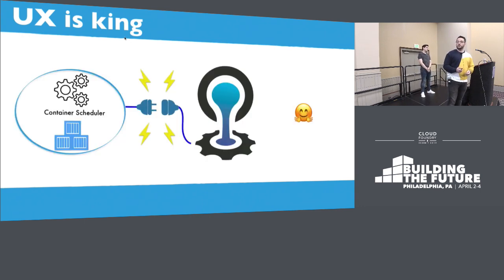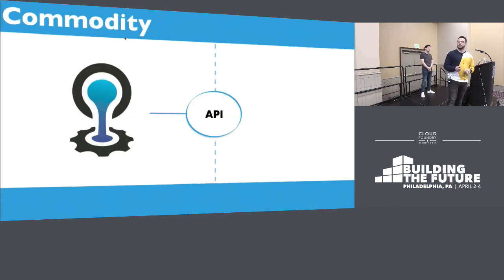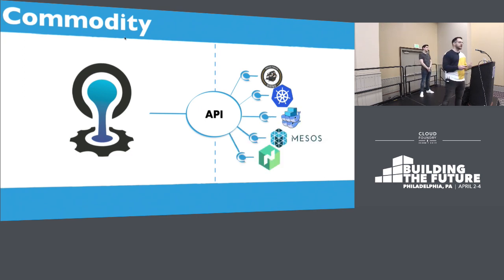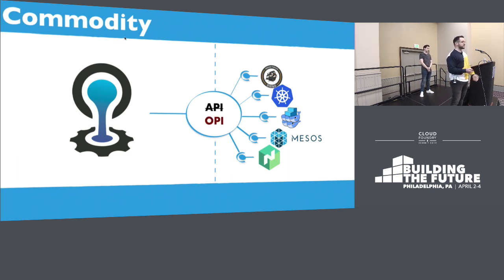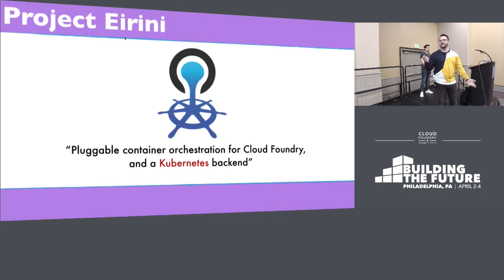Wouldn't it be nice if Cloud Foundry had a plug-in point where you could say I'll use another container orchestrator than Diego? Something like an API where you can say I want Diego, or I want Kubernetes, or potentially any other container orchestrator. We call it OPI — Orchestrator Provider Interface — similar to how Bosch has a CPI, which is Cloud Provider Interface. And yes, this is exactly what Irini is.